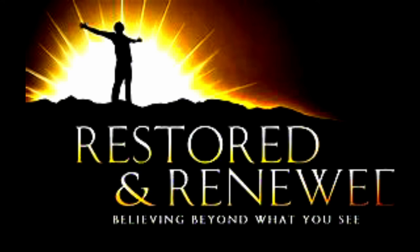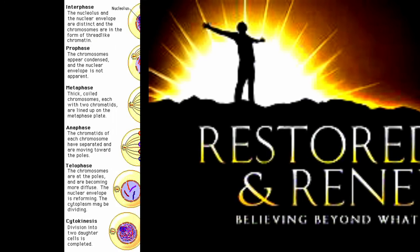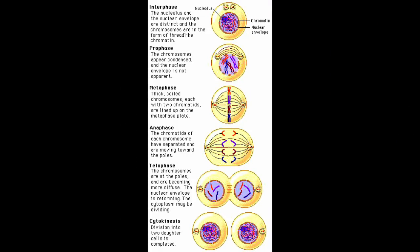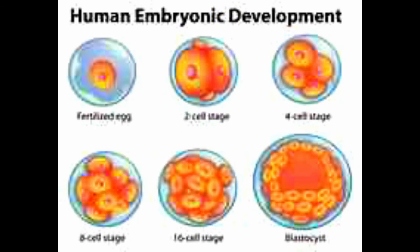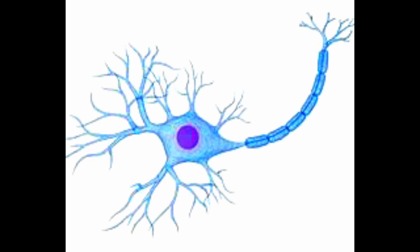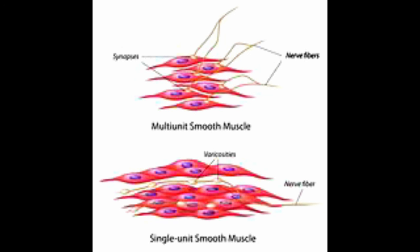After fertilisation, the cell divides by mitosis, producing a clump of identical cells — this is called an embryo. As the embryo develops, the cells differentiate, forming different cell types. In animals, these include nerve cells and muscle cells.